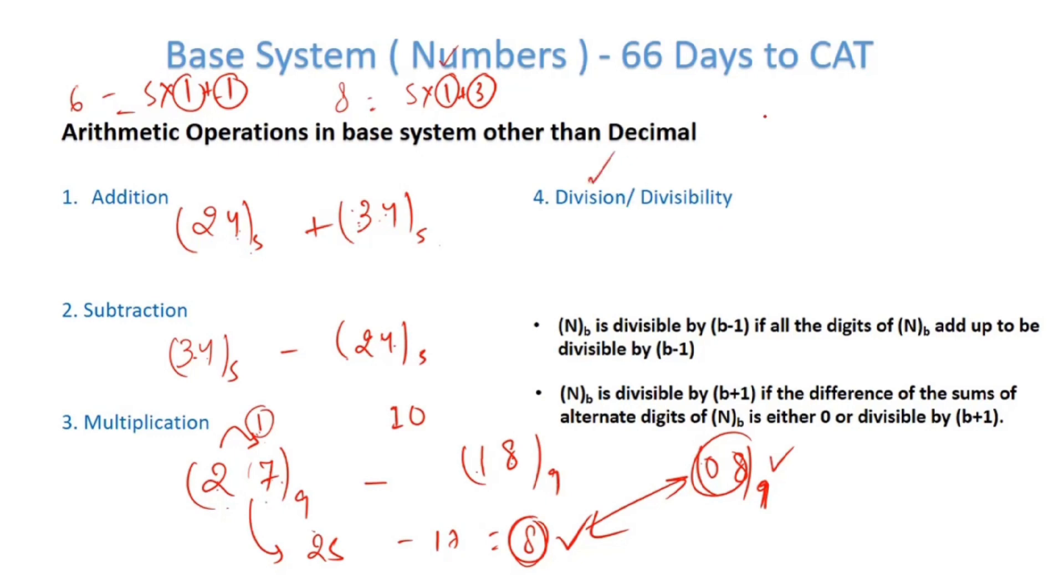Talking about division, let's say I divide 34 base 5 with 24 base 5. 24 and 34. So 1 times 24, remainder is 10. So what's the quotient here? What's the quotient here? The quotient is 1. And what's the remainder? Remainder is 10 in base 5.